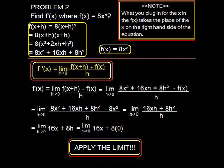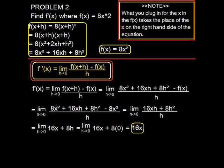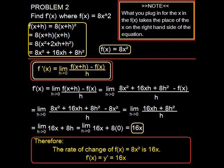We now apply the limit, because we can't take it any further, 8 multiplies into 0, and we're left with the final answer of 16x. Therefore, the derivative of 8x² is 16x.